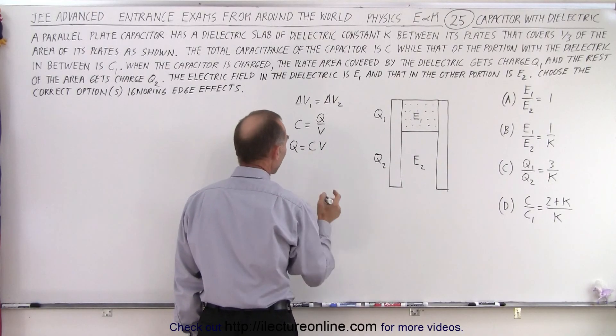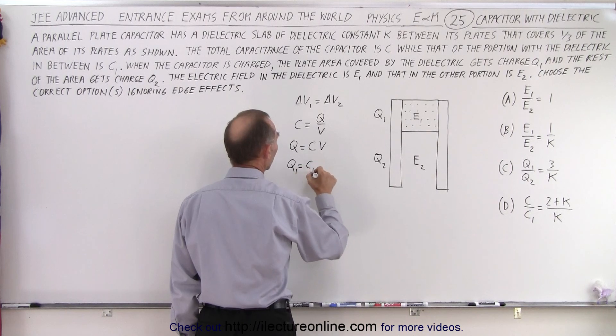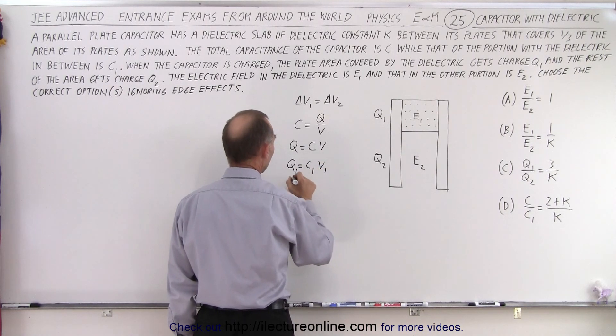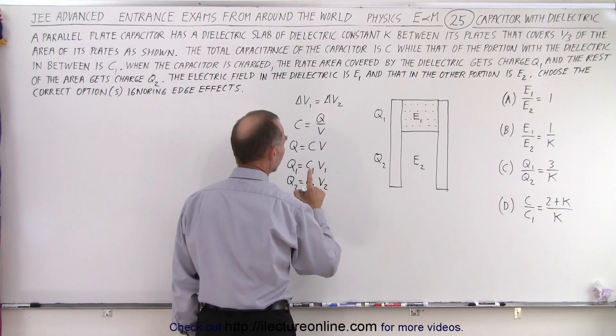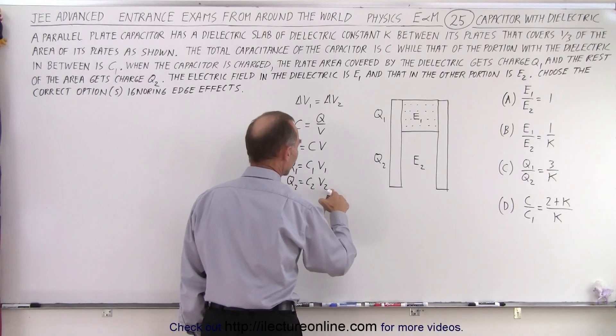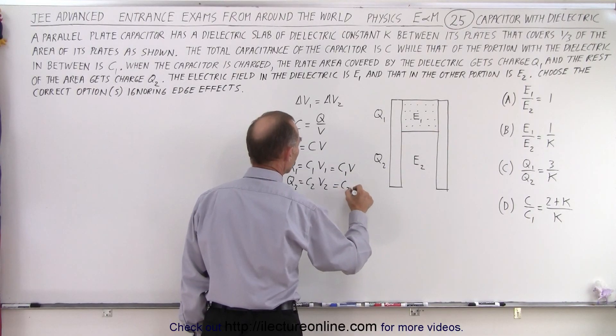And that means that Q1 must equal C1 times V1 and Q2 must equal C2 V2 and notice since V1 and V2 are the same, that simply is C1V and C2V.